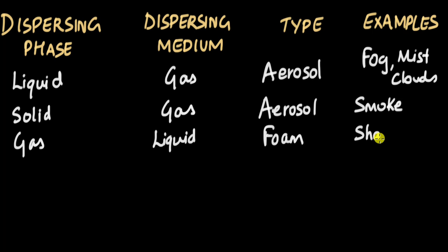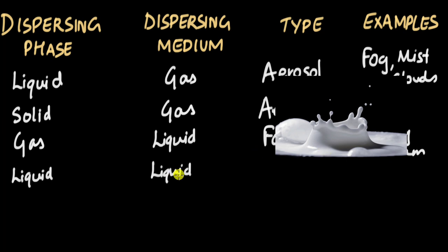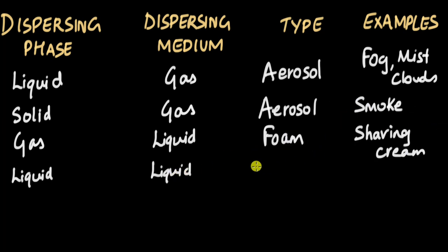Now let's take the dispersing phase as liquid and the dispersing medium as liquid. An example of this would be milk — milk is an example of this. This type of colloid is called an emulsion, so milk is an emulsion. One more example is face cream.